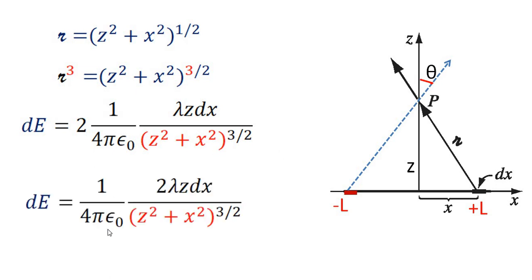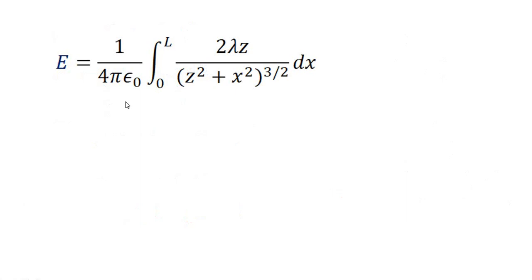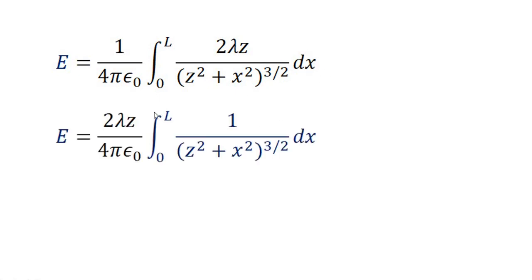The electric field is E = (1 / 4 pi epsilon_0) times the integral from 0 to L of 2 lambda z dx / (z² + x²)^(3/2). This simplifies to E = (2 lambda z / 4 pi epsilon_0) times the integral from 0 to L of dx / (z² + x²)^(3/2). We now need to evaluate this integral.